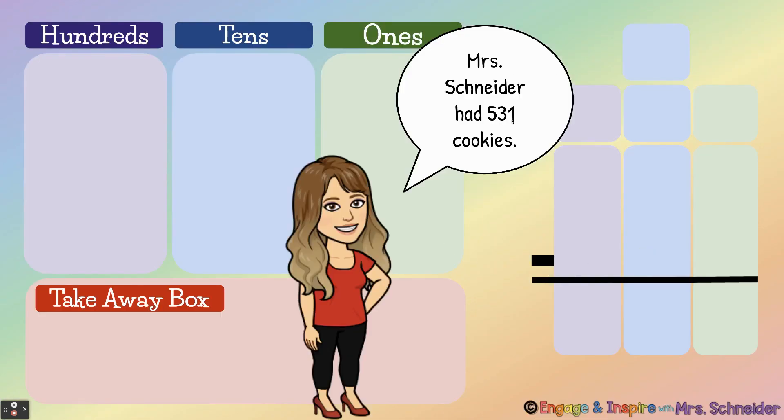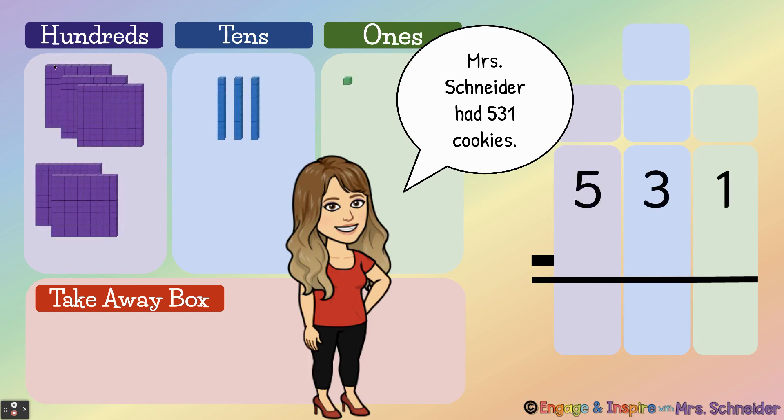Mrs. Schneider had 531 cookies. See, one, two, three, four, five hundred, ten, twenty, thirty, thirty-one. She gave away 175 cookies, so minus 175.